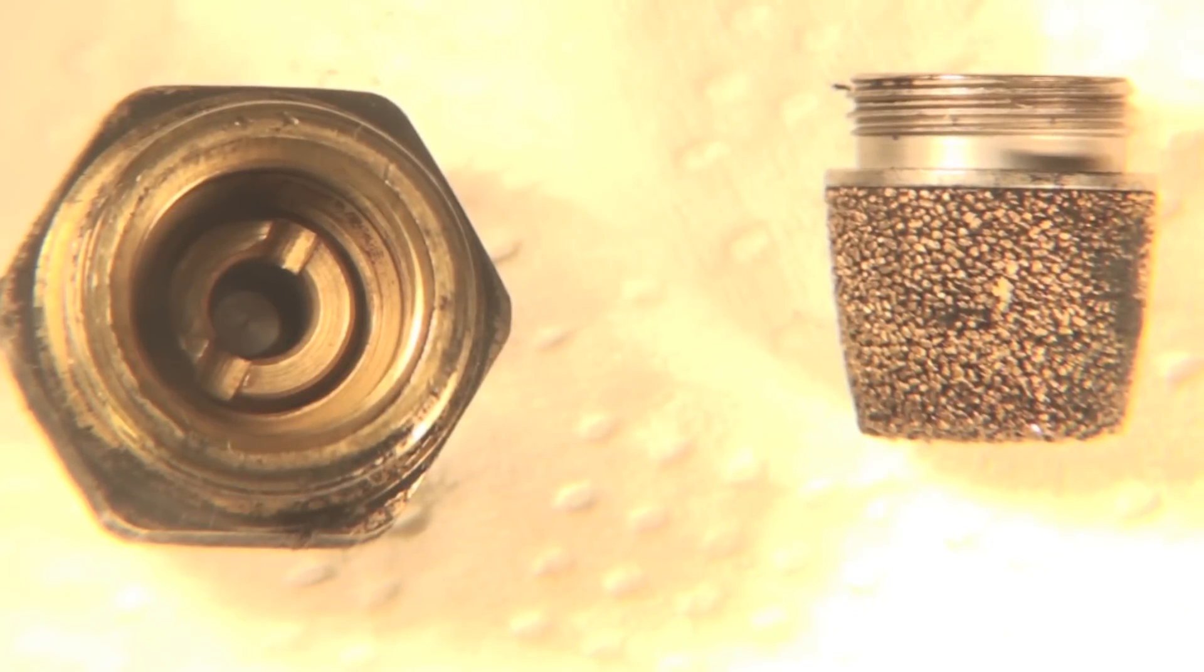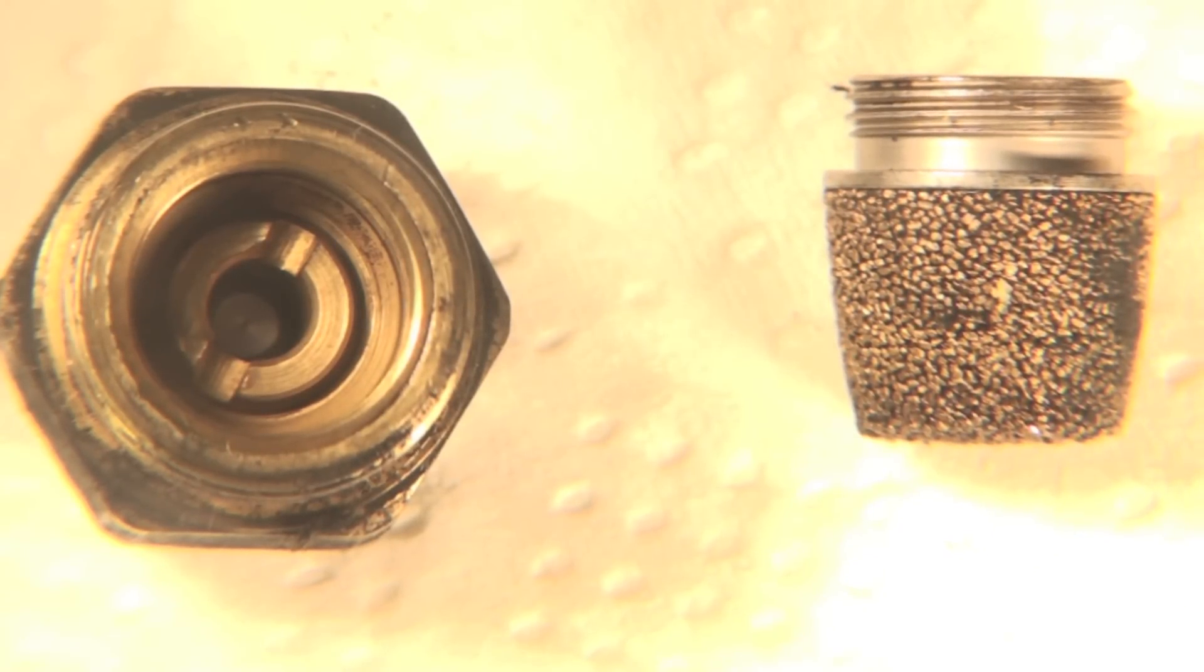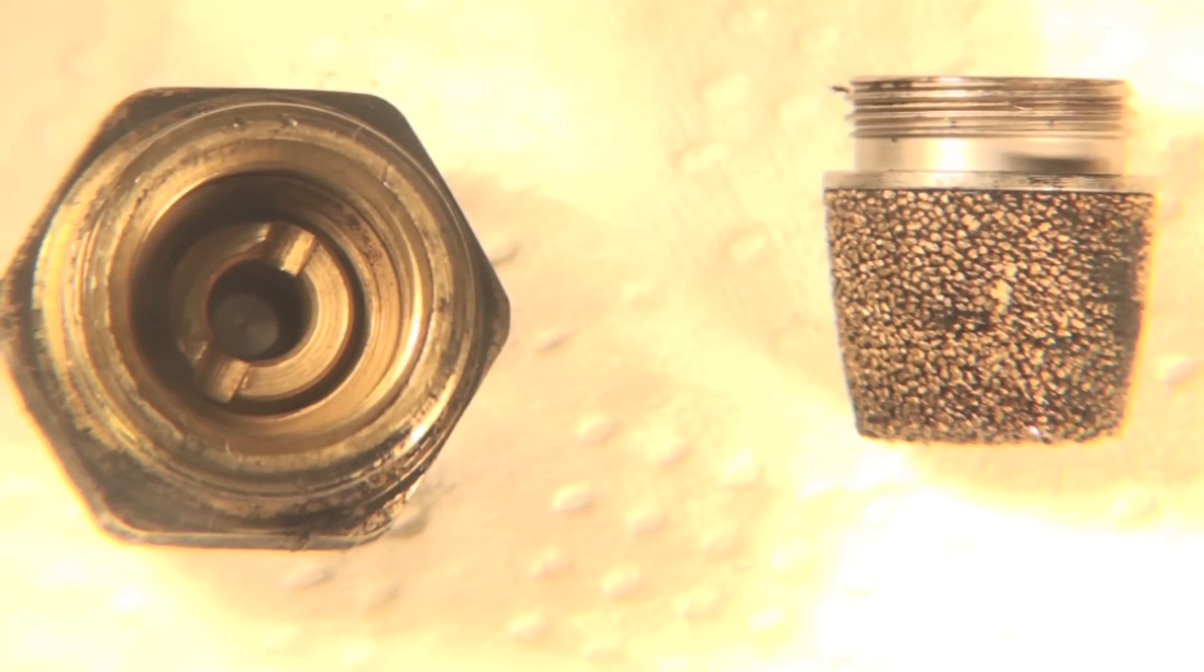Here we're showing it with the filter removed. That filter is what we call a sintered bronze filter, which means it's little chunks of bronze all stuck back together. It keeps small particles from getting through into the nozzle.